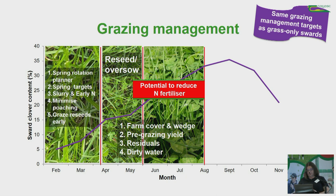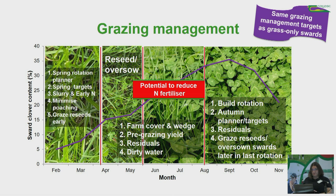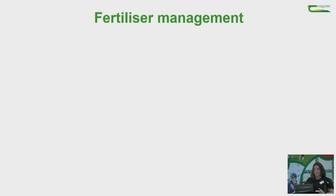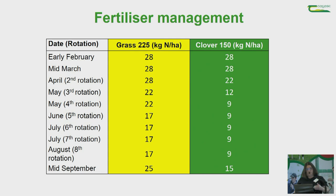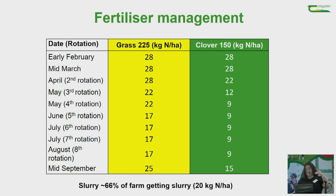Moving into the autumn: start to build your rotation from about mid-August onwards, use your autumn planner and the 60-40 rule — 60 percent grazed by the first of November, farm closed by the first of December. Watch your residuals and try to get down to 3.5 centimetres if possible in the last rotation. Graze reseeded and oversown swards a bit later in the last rotation. In terms of fertilizer management, make the best use of slurry applied by low-trajectory in spring to get the best return on nitrogen, aiming to get slurry out on as much of the farm as possible in early spring.